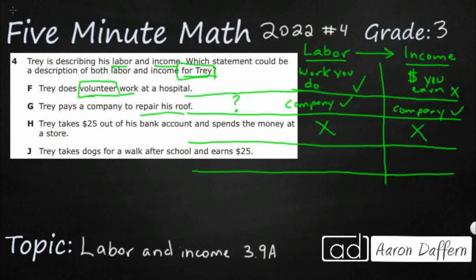Let's hope it's J. J, Trey takes dogs for a walk. Okay. So, there's some labor. He's doing some work. He's taking dogs for a walk. That is a job. After school, he earns, ooh, look at that. He's got some income. He earns some money. So, that's a much better answer than G. So, Trey is doing the work. He's walking the dogs. Trey is getting the $25 for that work, which means our answer is going to be J.